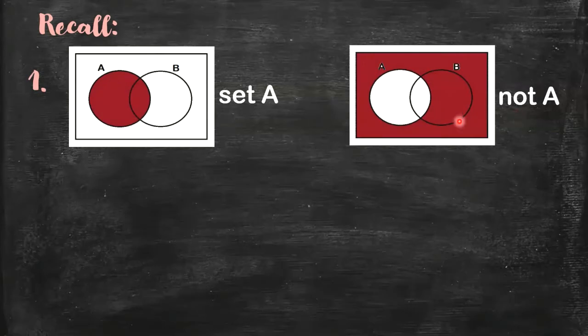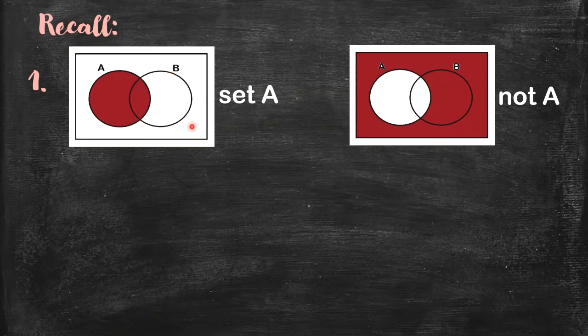Same thing if I say set B — what you shade is the given set B. And when I say not B, you shade all the portion outside B.